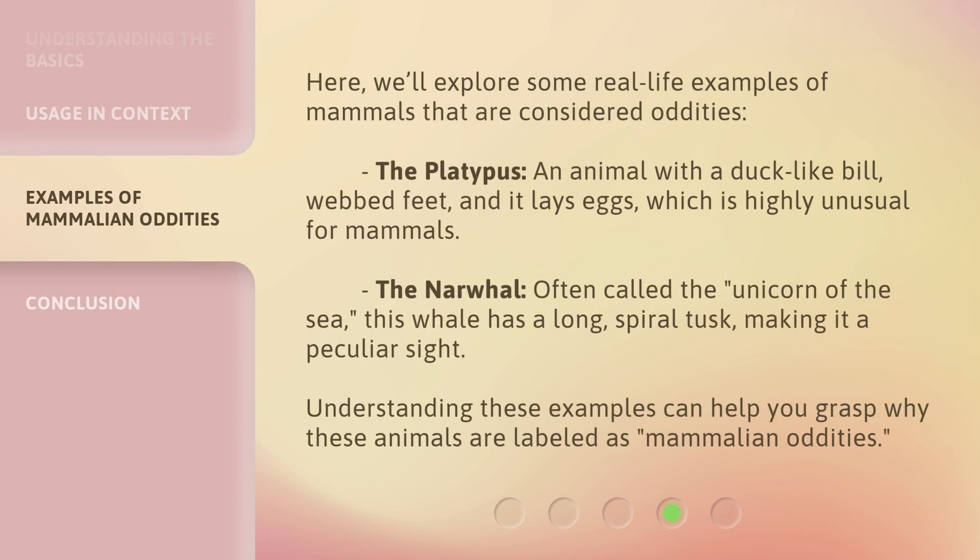Here we'll explore some real-life examples of mammals that are considered oddities. The platypus — an animal with a duck-like bill, webbed feet, and it lays eggs, which is highly unusual for mammals. The narwhal, often called the unicorn of the sea — this whale has a long spiral tusk, making it a peculiar sight. Understanding these examples can help you grasp why these animals are labeled as mammalian oddities.